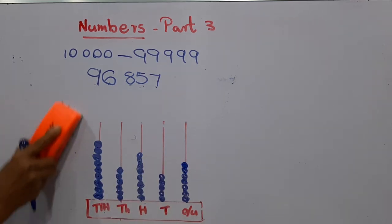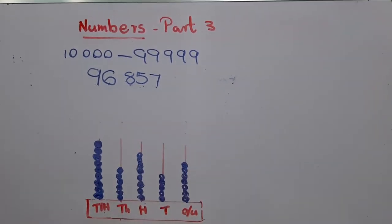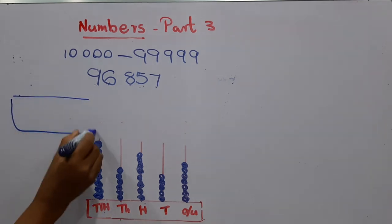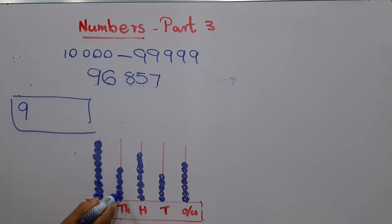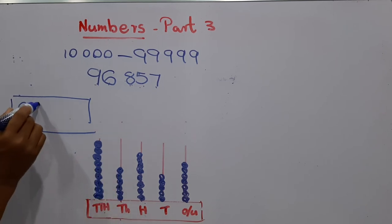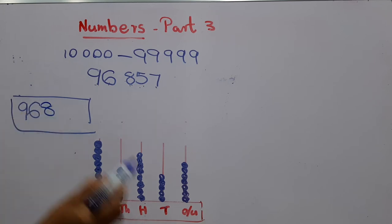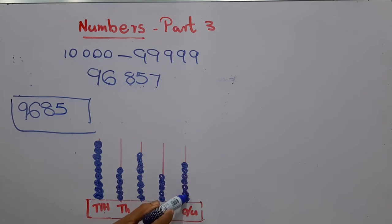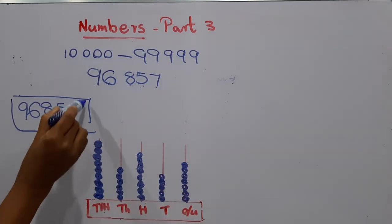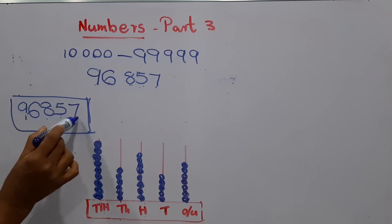Now we are going to write the number represented on this abacus. Ten-thousands place: nine. Thousands place: six. Hundreds place: eight. Tens place: five. Ones place: seven. The number is 96,857. When we call the number name, that is ninety-six thousand eight hundred and fifty-seven.